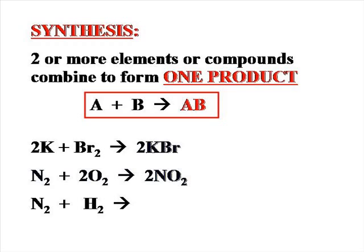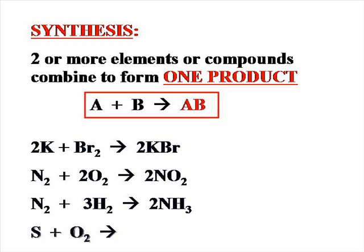Nitrogen gas and hydrogen gas would react to form the simple compound ammonia. Once the correct formula for ammonia has been written, then the equation will be balanced. Sulfur and oxygen react to form either sulfur dioxide or sulfur trioxide. We're going to pick the simpler sulfur dioxide, and the equation is already balanced.